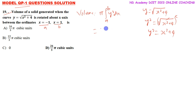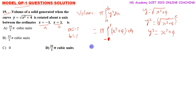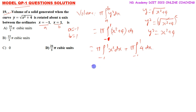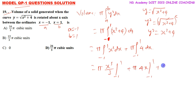With a equals minus 1 and b equals 1, volume equals pi times integration from minus 1 to 1 of (x squared plus 4) dx. Splitting: pi times integration of x squared dx plus pi times integration of 4 dx. Integrating: pi times [x cubed by 3] from minus 1 to 1 plus pi times [4x] from minus 1 to 1.